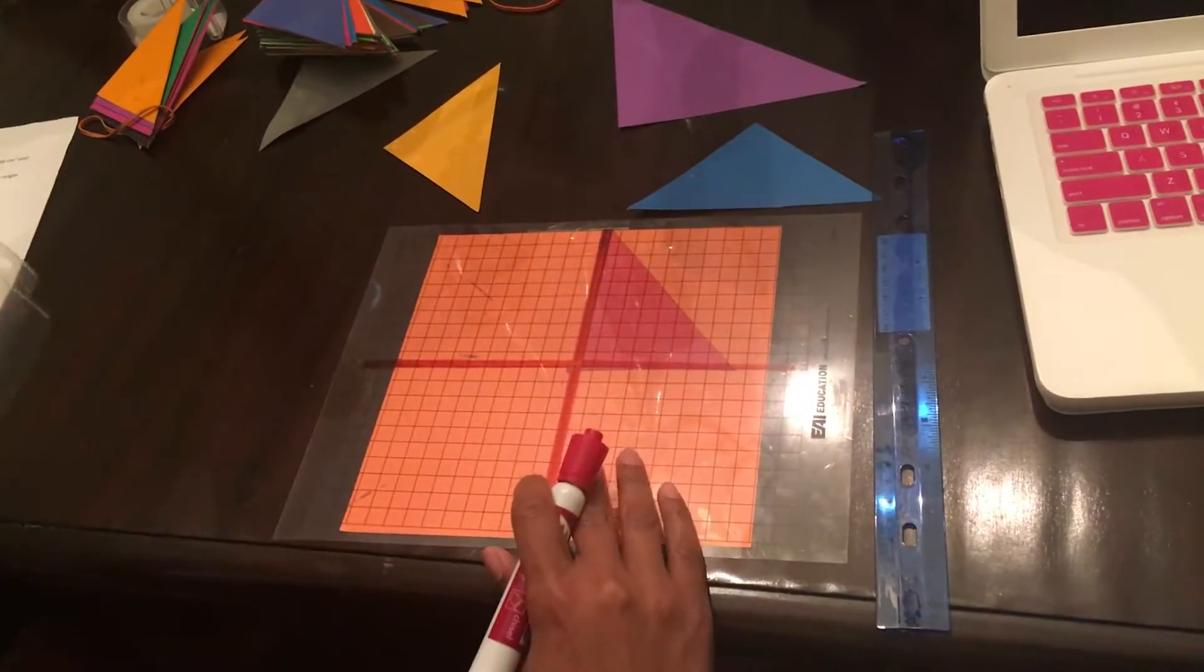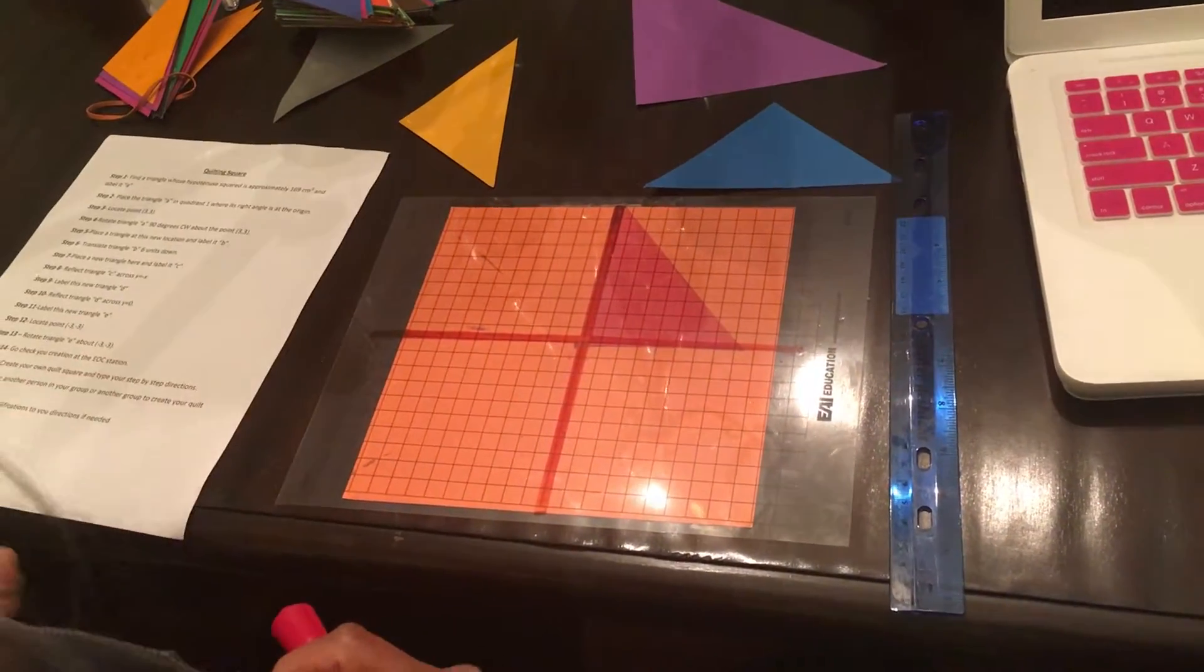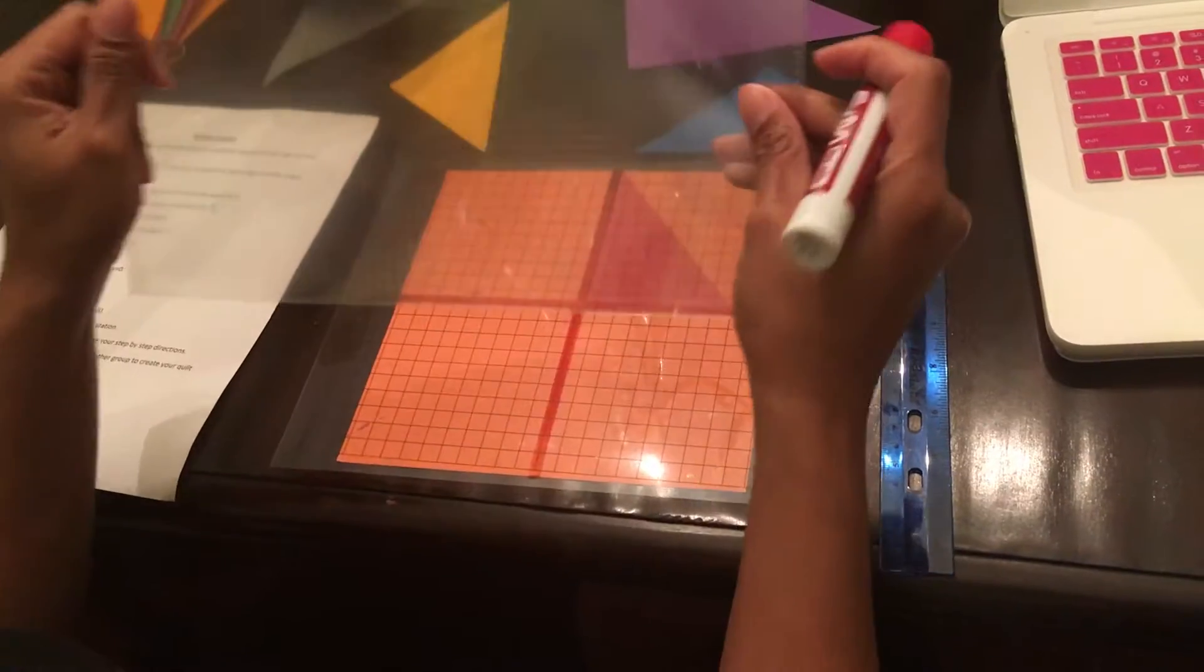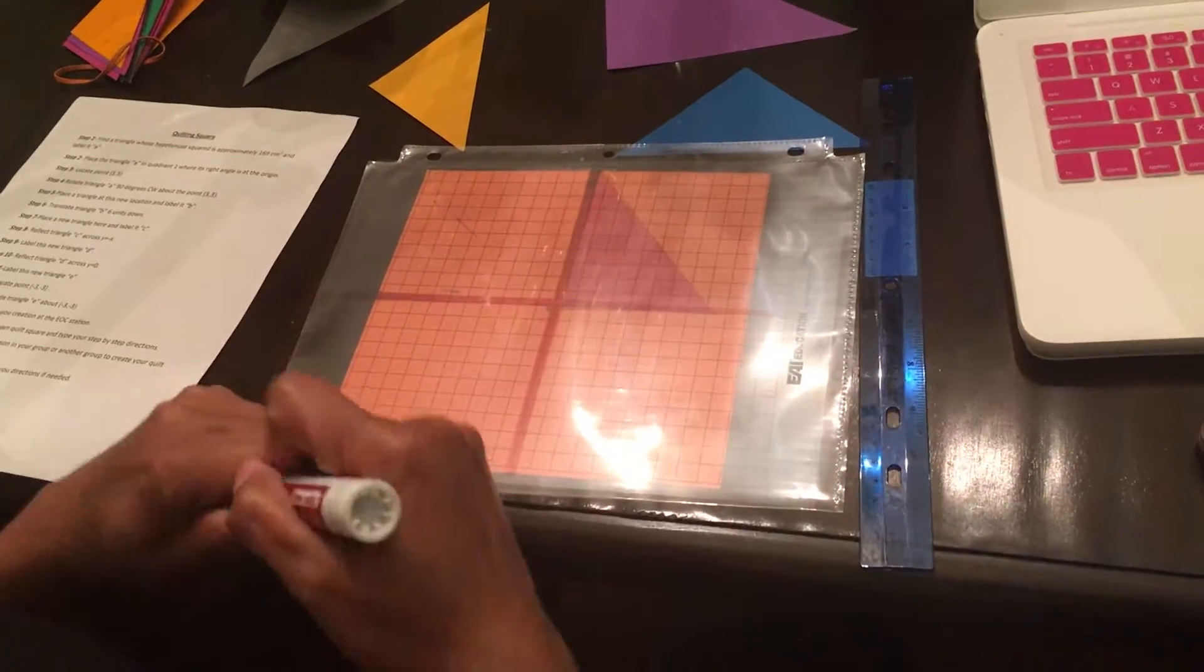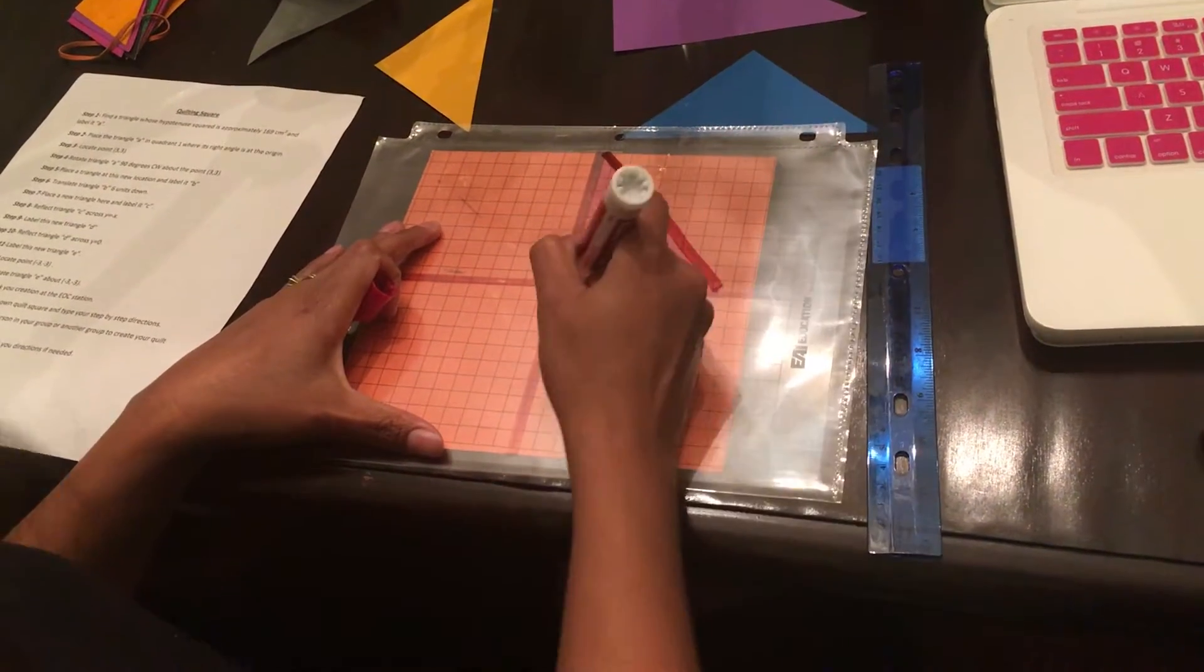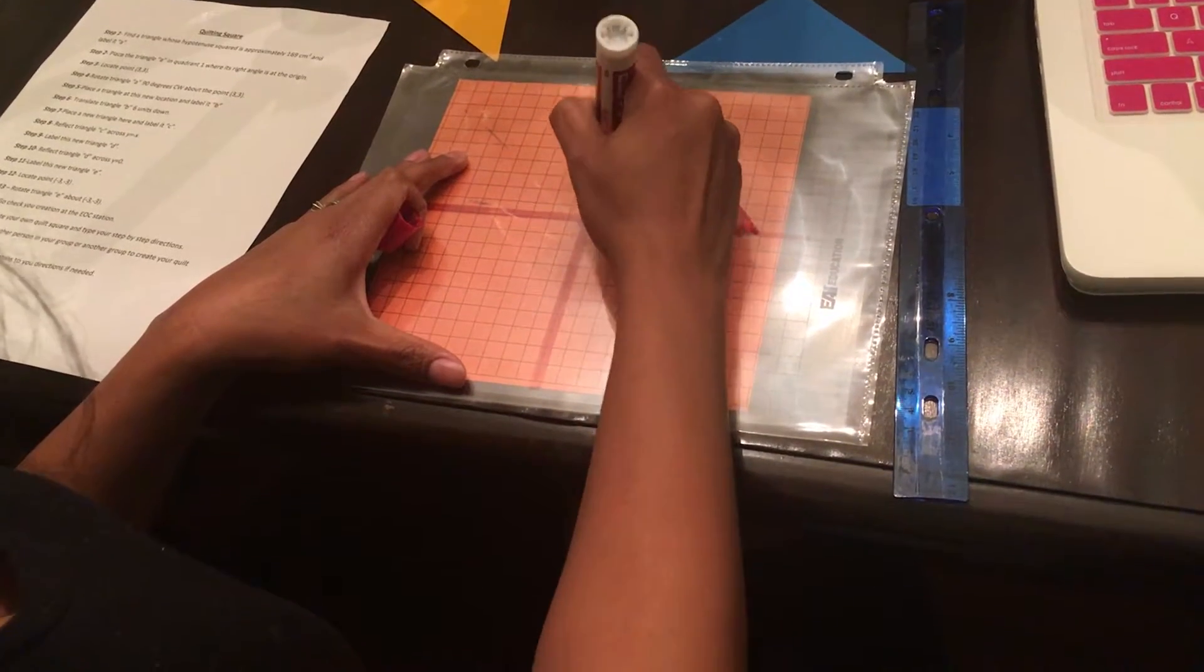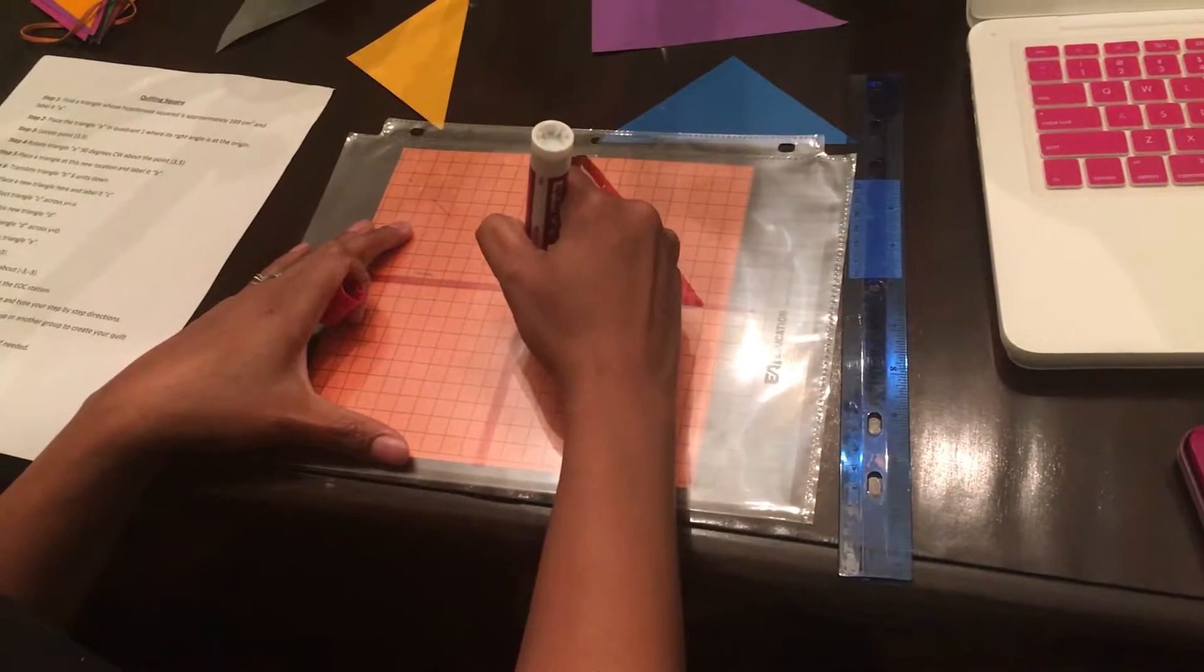Okay, make sure now I've put the triangle at the first place because it says place triangle A in quadrant one with this right angle at the origin. Make sure you have a clear sheet. You're going to place it on top of this and you are going to trace it. I think when we practiced in class this was not something that some people showed that they need help with, so this part I'm pretty sure everybody can do.